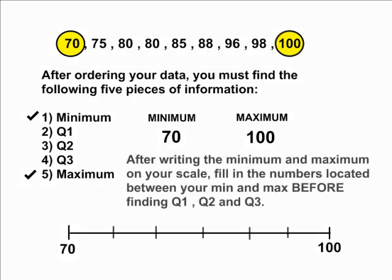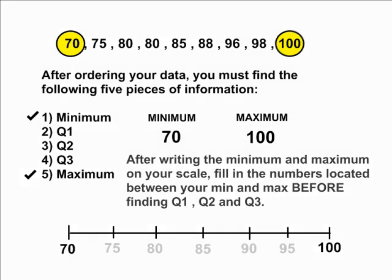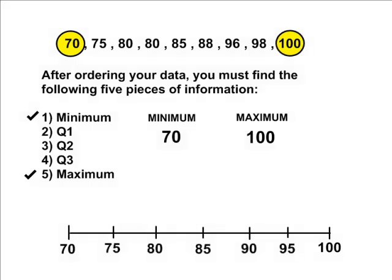After you have established the minimum and maximum of your scale, fill in all the missing numbers between your minimum and maximum. In this case, I'm just going to count by 5's to keep things simple. You should do this before finding Q1, Q2, and Q3. When drawing your scale, you are really just drawing a snapshot of the number line that starts at 70 and ends at 100.